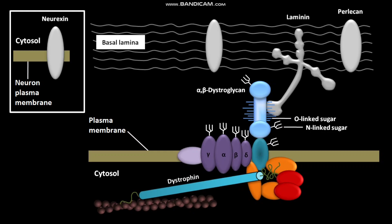Dystroglycan is synthesized as a large glycoprotein precursor, which is then proteolytically cleaved into two sub-units: an alpha sub-unit and a beta sub-unit. The alpha sub-unit of dystroglycan is a peripheral membrane protein, while the beta sub-unit is a transmembrane protein. The extracellular domain of the beta sub-unit associates with the alpha sub-unit of dystroglycan.